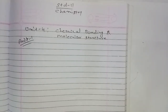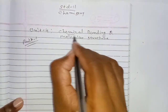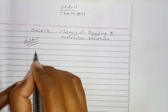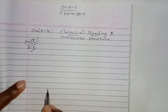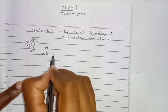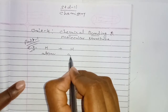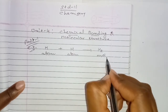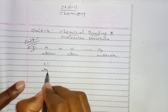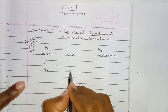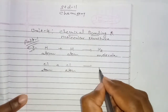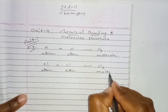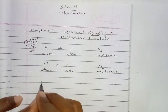Standard 11 chemistry, unit 4: Chemical Bonding and Molecular Structure, Part 1. Here we discuss chemical bonding. First, let's see the example: a hydrogen atom combined with another hydrogen atom forms a hydrogen molecule. A chlorine atom combined with another chlorine atom forms a chlorine molecule.